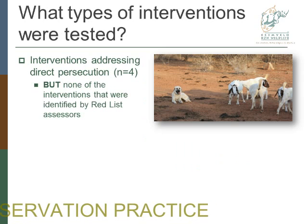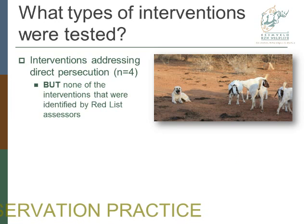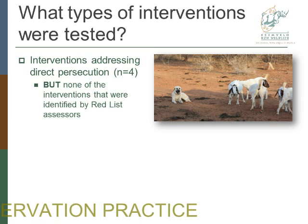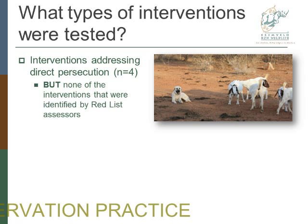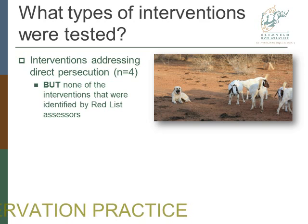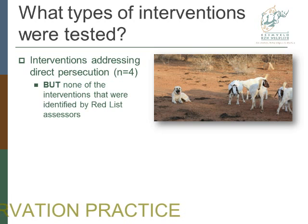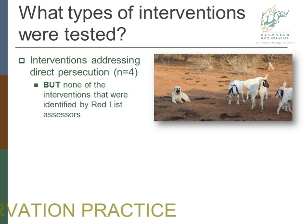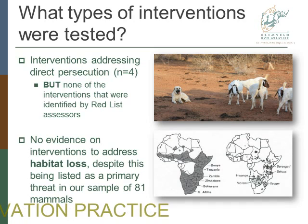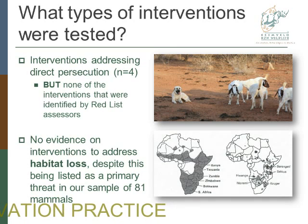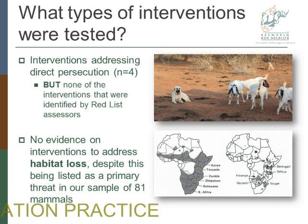When we look at what types of interventions were tested, four of the 19 papers looked at interventions that address direct persecution — which is good, because direct persecution was identified as a major threat. But none of them actually tested the interventions that the Red List assessors had specifically identified. So even though we're moving in the right direction, there is still a gap. All the other interventions were randomly spread across different things. There was also no evidence on interventions to address habitat loss, even though three of the top five threats related to habitat loss — despite this being listed as a primary threat in our sample of 81 mammals.